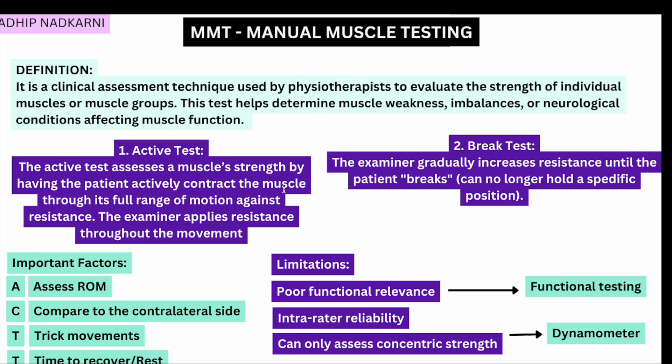There are a few important factors to consider when assessing muscle strength through MMT. These factors are: assessing the range of motion, comparing the contralateral side, trick movements, and time to recover or rest. This can be remembered through the mnemonic ACT. Assessing range of motion is important because under the modified MRC scale, plus and minus values determine what range the patient can achieve when graded at 2 and 3.